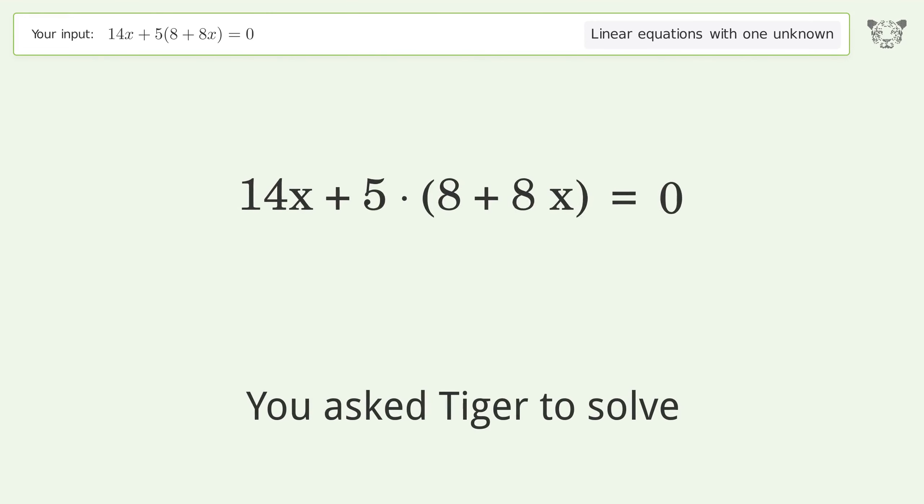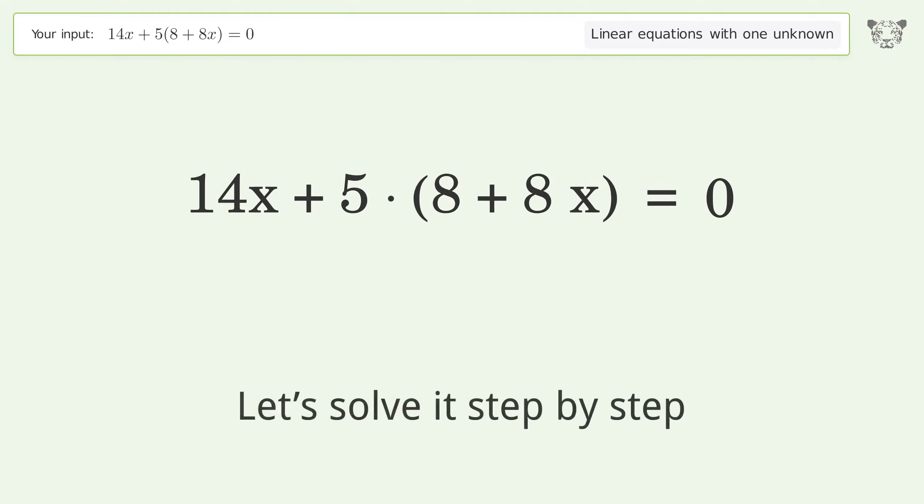You asked Tiger to solve this. It deals with linear equations with one unknown. The final result is x equals negative 20 over 27. Let's solve it step by step.